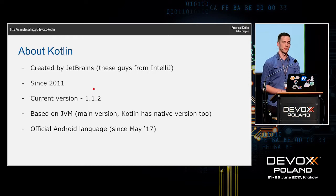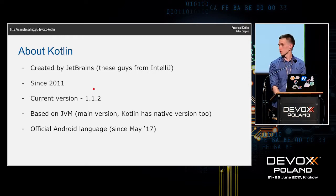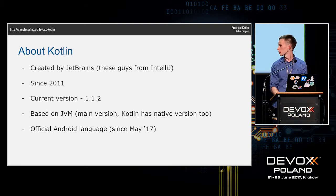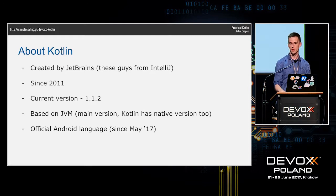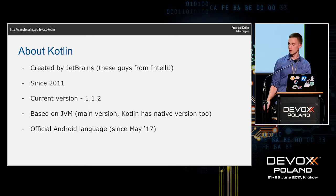Kotlin is an official language of Android, which was announced at Google I/O conference this year in May. It's not insignificant that a big name like Google can trust this technology and the developers of Android.